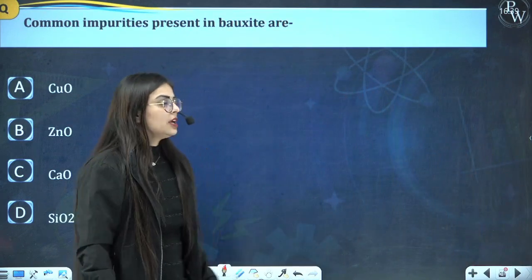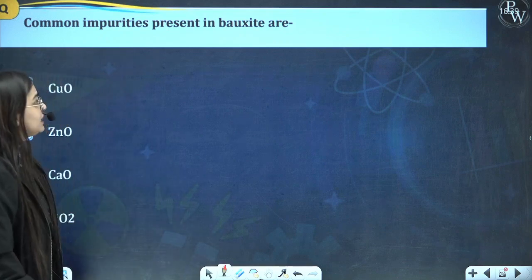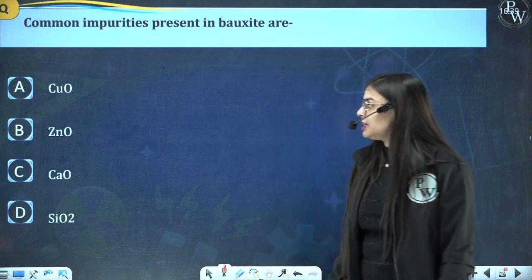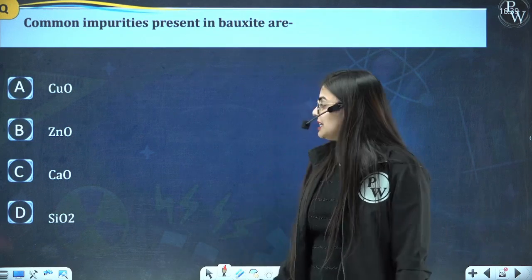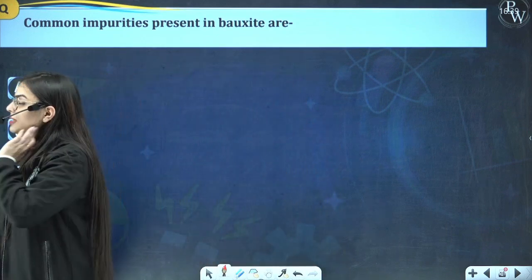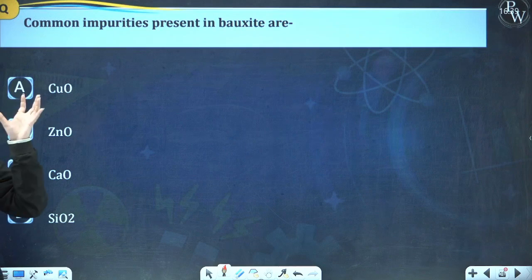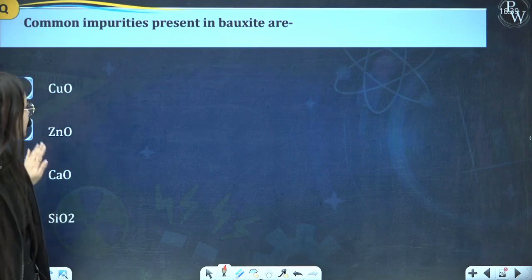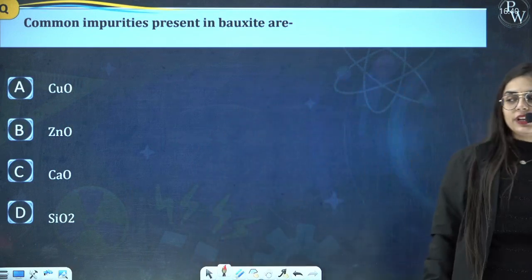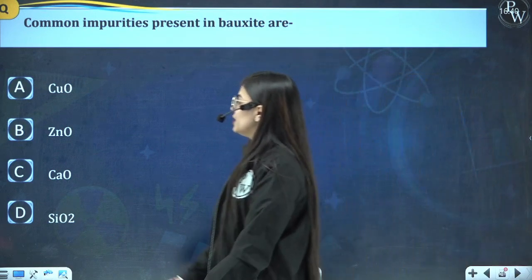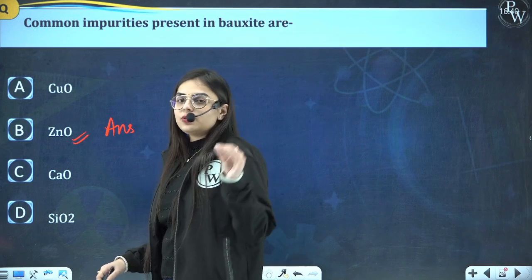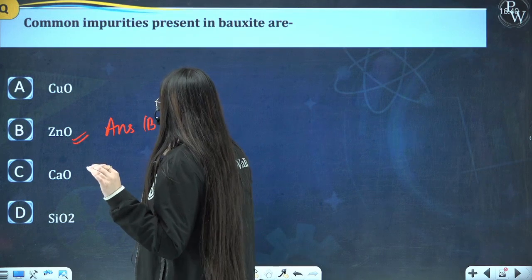Q5: Common impurities present in bauxite are? A: CuO, B: ZnO, C: CaO, D: SiO2. The answer comes out to be option D — SiO2 is the common impurity (gang) present in bauxite.